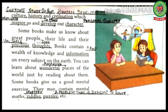Come to the next line. Some books give us a good mental exercise. They may contain mental maths, riddles and puzzles. Underline 'riddles' — write down: mystery. Underline 'puzzles' — write down: a problem that is difficult to solve. Some books are based on mental exercises like riddles, puzzles and mental maths. You should try to solve the questions in these books as they sharpen your brain. You must read a variety of books to increase your knowledge.